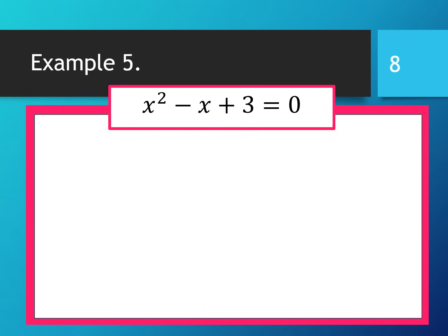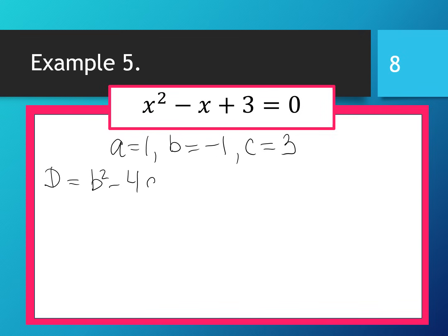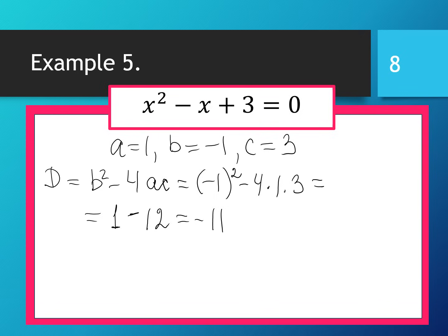Last example — Example 5. The equation is x² - x + 3 = 0. Coefficients: a = 1, b = -1, c = 3. Discriminant equals b² - 4ac = (-1)² - 4 × 1 × 3 = 1 - 12 = -11. Since -11 < 0, our quadratic equation has no real roots.